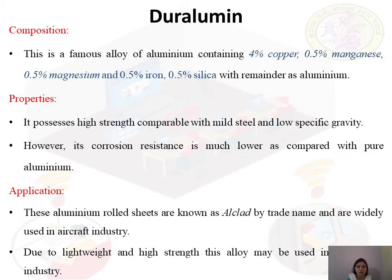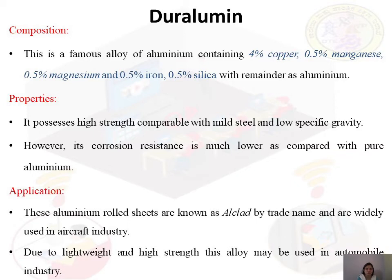Duralumin has high resistance to corrosion and can take a high polish, giving it good aesthetic appearance. Its applications include pistons, aircraft industries, automobile industries, making electrical cables, and surgical and orthopaedic implements. Because of its light weight and high strength, it is widely used in aircraft and automobile industries.